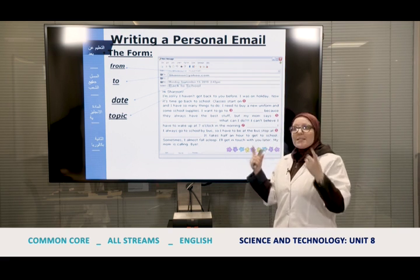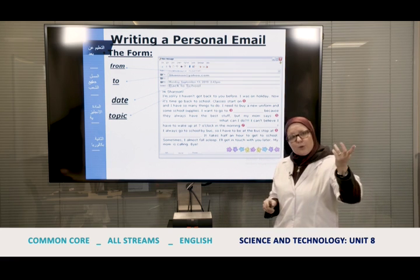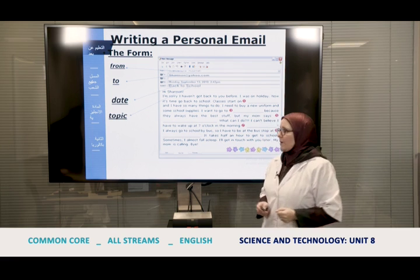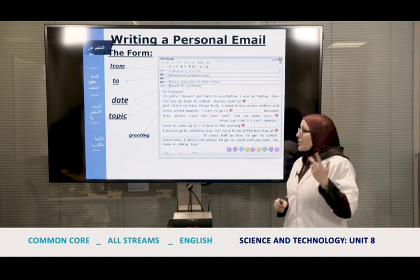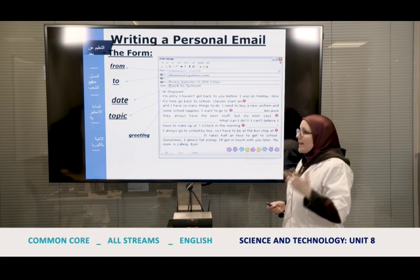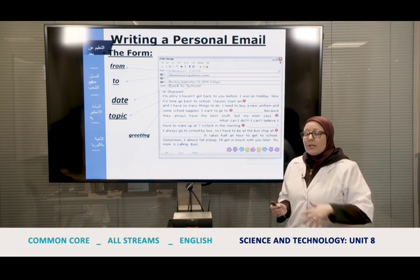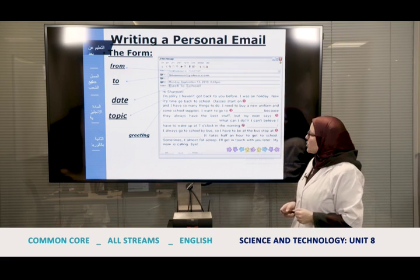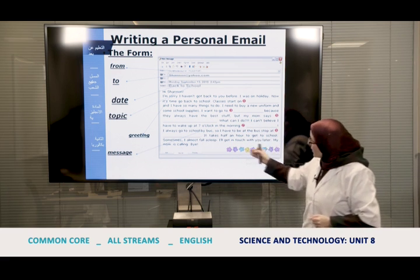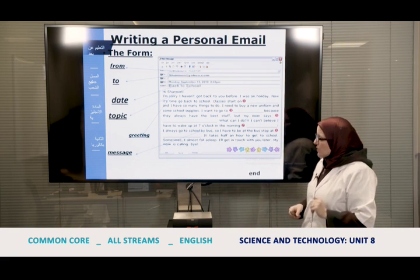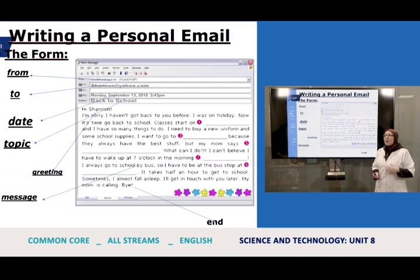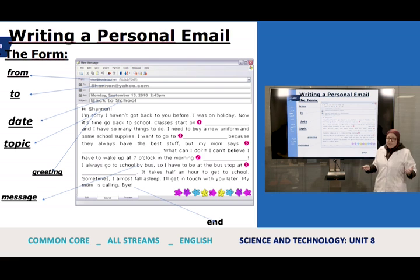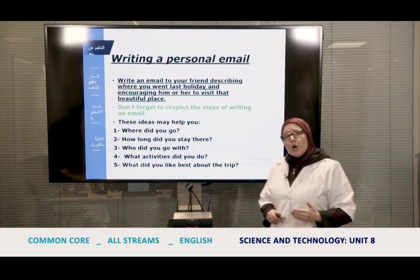For the subject, write the topic of your email — for example 'Last Holiday' or 'Moroccan Food' — so the receiver knows what it's about. Then comes the greeting: since it's informal you can write 'Hi Shannon,' 'Dear James,' or 'Dear Ellie.' After that comes the message body. When you finish, close with 'Bye,' 'Your best friend,' 'With love,' or 'My best wishes,' followed by your name. These are the steps for writing a personal informal email.